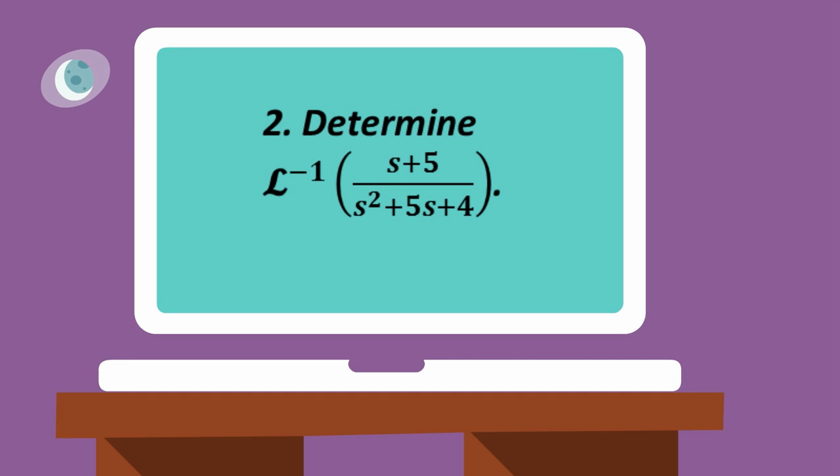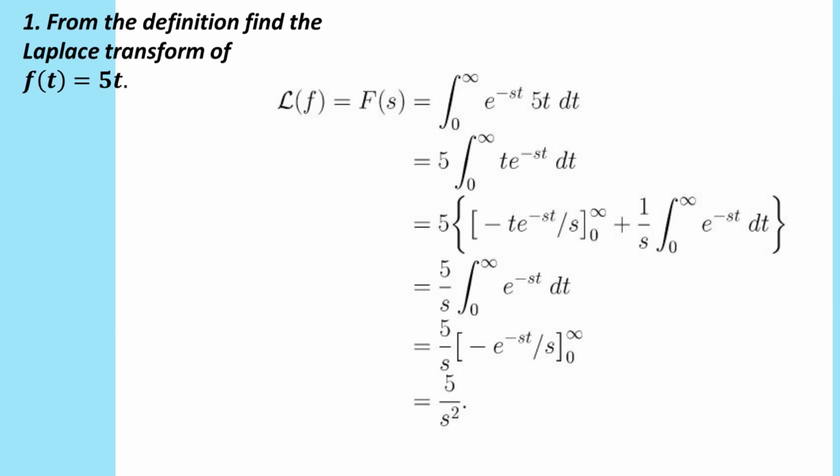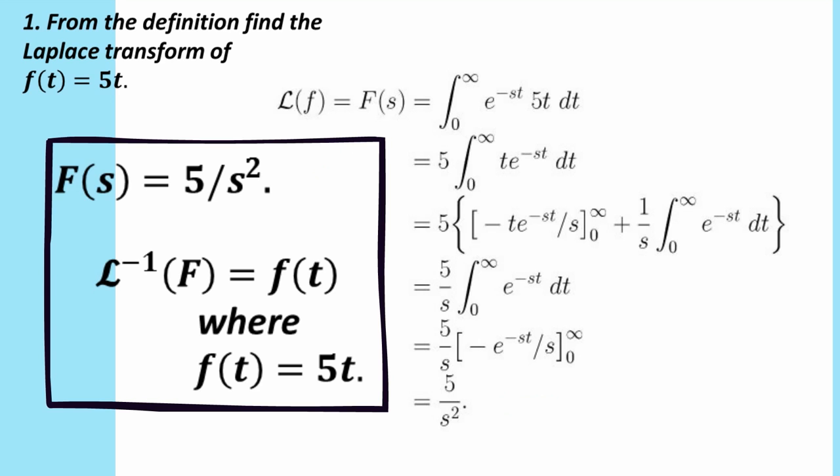In this second question, we haven't seen yet what this L with the power of negative 1 means. It's the inverse Laplace transform. You've probably seen inverse functions in your studies. If we go back to question 1, we can explain it with this example. We saw that if we have f of t equals 5t, the Laplace transform is 5 on s squared. So we say that the inverse Laplace transform of big F is equal to f of t, where f of t equals 5t.